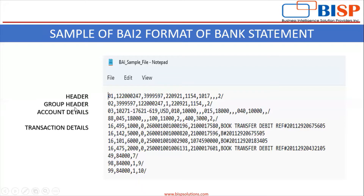In the second line this is the group header. Again this is the receiver's unique identification number. This is the routing number of the bank branch. Again this is the date and this is the time.